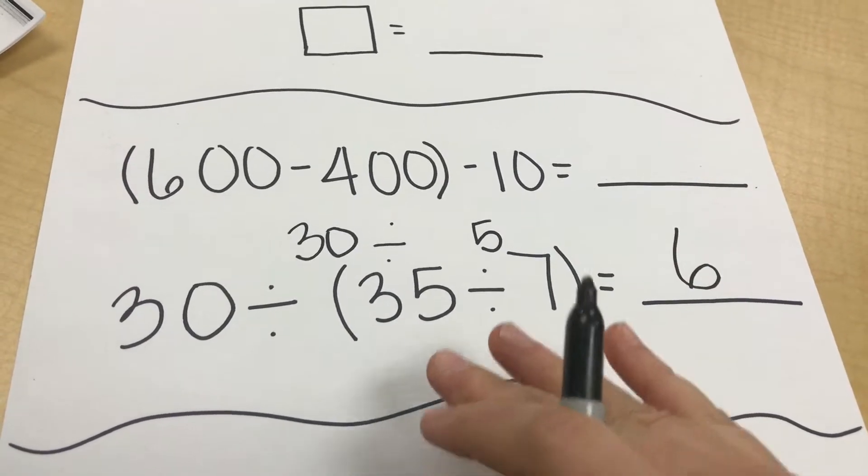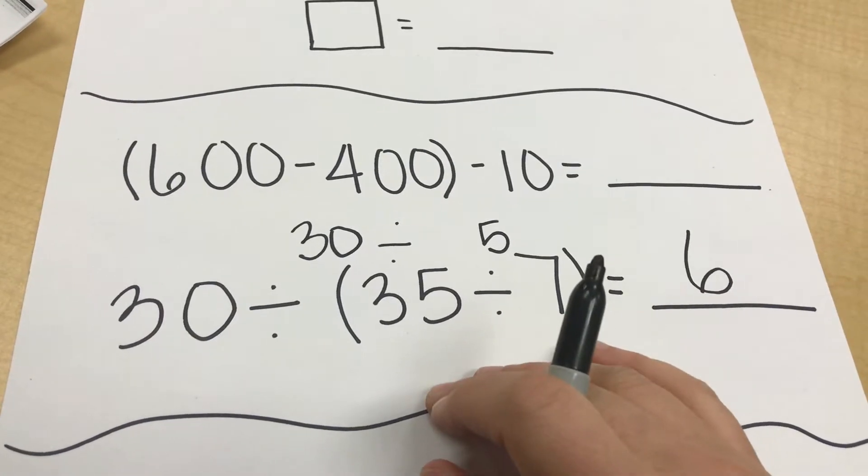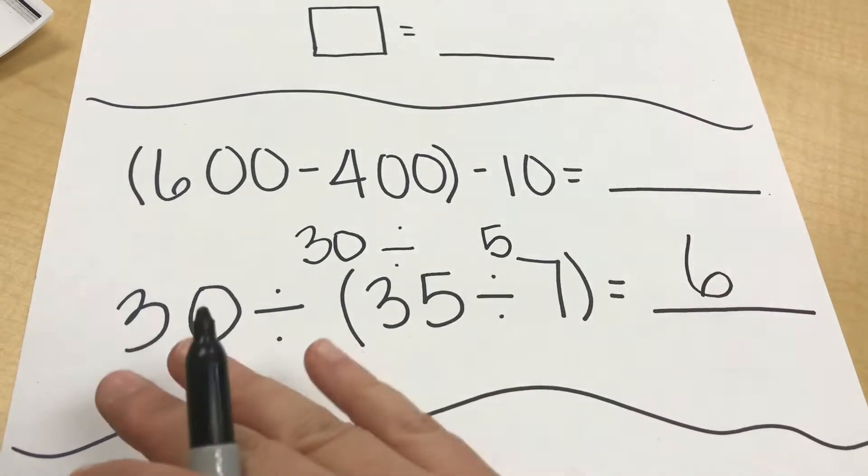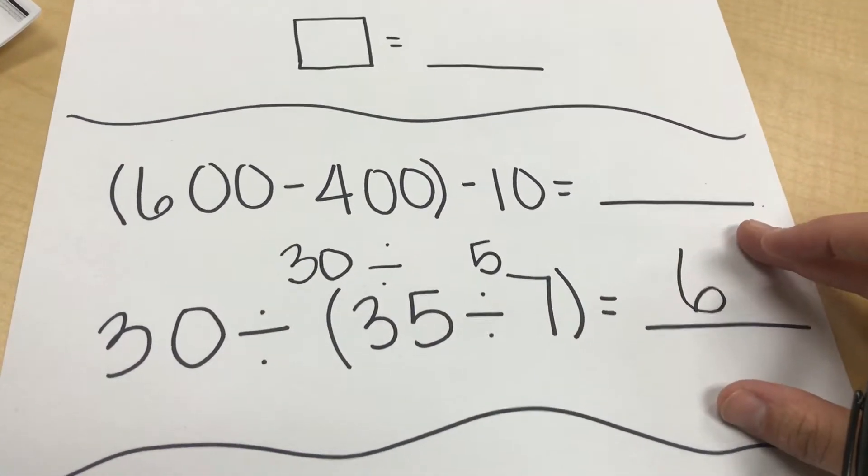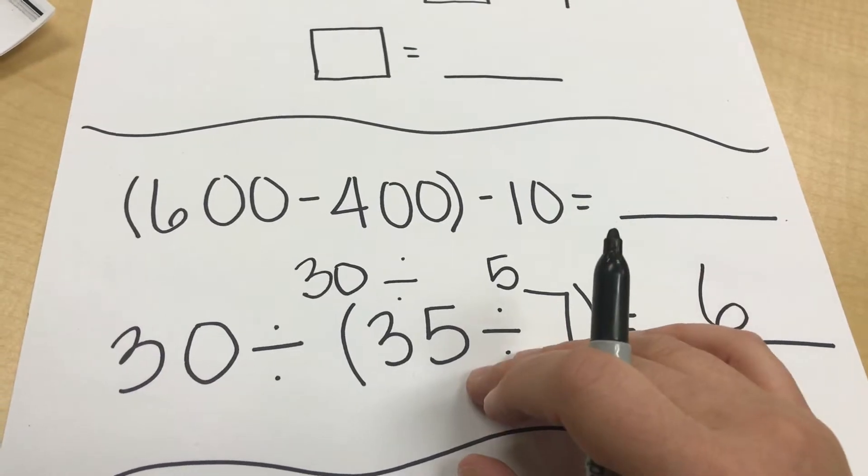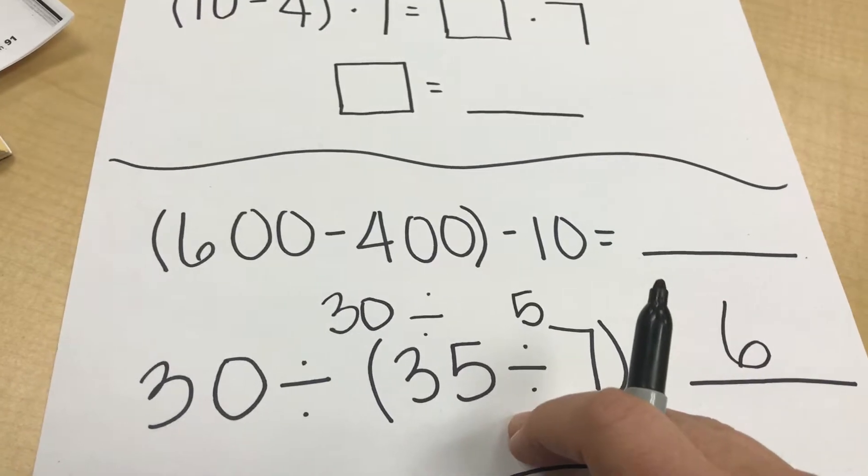For these problems, the students need to slow down and make sure that they do each individual step correctly. Because if they do the division incorrectly inside the parentheses, then no matter how well they do the problems outside the parentheses, they will get it wrong. So slowing down, making sure that they do each operation correctly is the key to these problems.